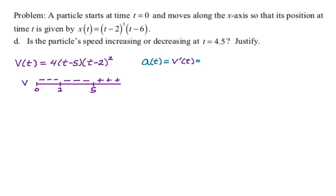So same thing, I want to connect acceleration to velocity. So a(t) is v prime of t. We're going to product rule this. So I'm going to say the first function is 4(t minus 5) and then the second function is (t minus 2) squared. So first times derivative of the second is a chain rule problem, plus second times derivative of the first is actually four.